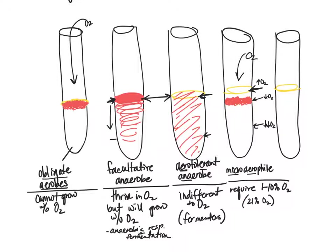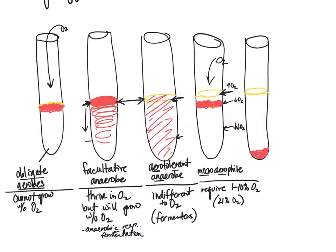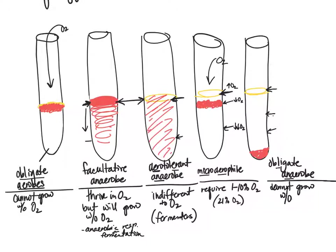Our last tube shows lots of growth only at the very bottom with no growth anywhere else. This means the organism cannot grow when oxygen is present at any level above the bottom. This makes it an obligate anaerobe — it is obligated to be without oxygen and cannot grow where oxygen is present.